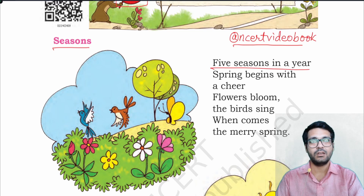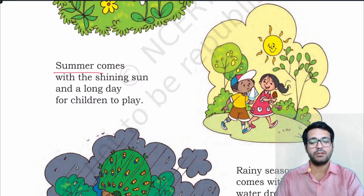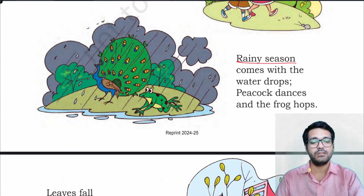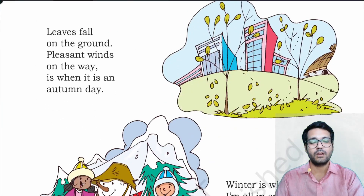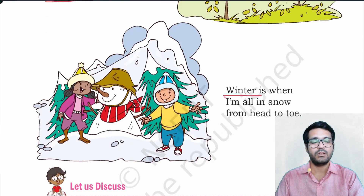Five seasons in a year. Spring begins with a cheer. Flowers bloom, the birds sing, when comes the merry spring? Summer comes with the shining sun and a long day for children to play. Rainy season comes with the water drops, peacock dances and the frog hops. Leaves fall on the ground, pleasant winds on the way — that is when it is an autumn day. Winter is when I am all in snow from head to toe.